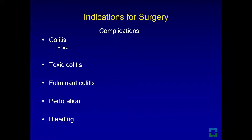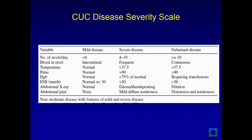The modified Truelove criteria provides a severity scale — mild, severe, and toxic/fulminant — based on number of stools per day, presence of blood, temperature, pulse, hemoglobin, ESR, and X-rays. When a patient presents with severe ulcerative colitis, hospital admission is required, with complete evaluation including serology (ESR, CRP, CBC, complete metabolic profile), and always ruling out infectious causes such as C. diff, CMV, and ova and parasites.